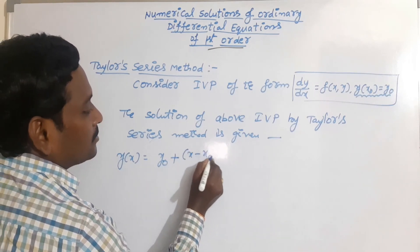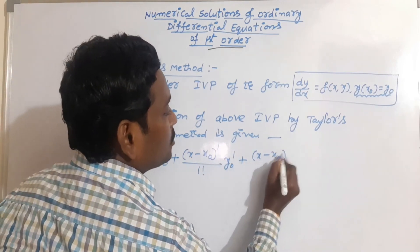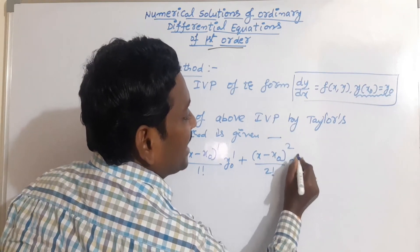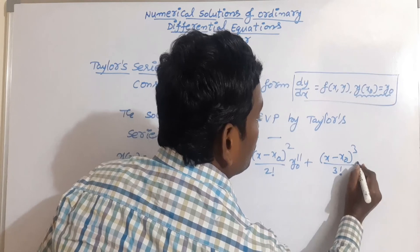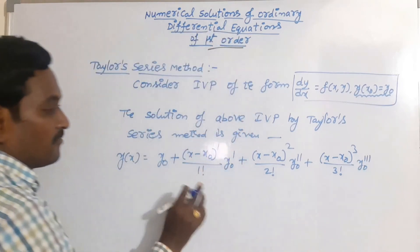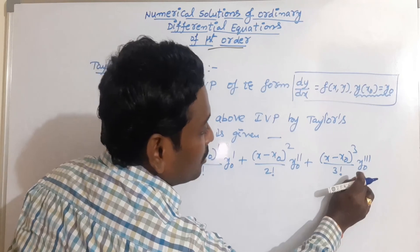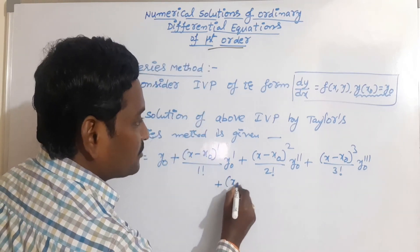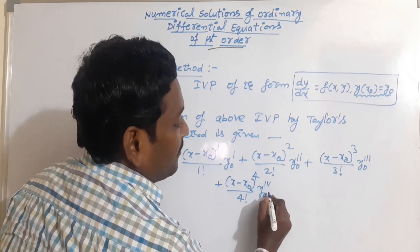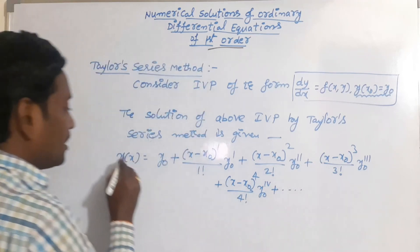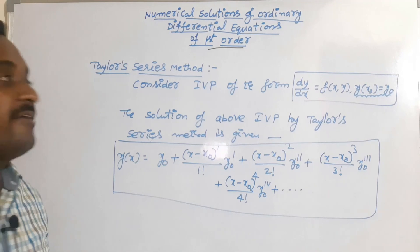...plus x minus x-naught whole power 1 divided by 1 factorial into y-naught dash, plus x minus x-naught whole squared by 2 factorial into y-naught double dash, plus x minus x-naught whole cube by 3 factorial into y-naught triple dash. This is the first derivative at the point x-naught, this is the second derivative, and this is the third derivative. Similarly, we can write the next term: x minus x-naught whole power 4 by 4 factorial and y-naught fourth derivative, and so on. This is the Taylor series method formula; by using this we can easily obtain the solution of the given initial value problem.